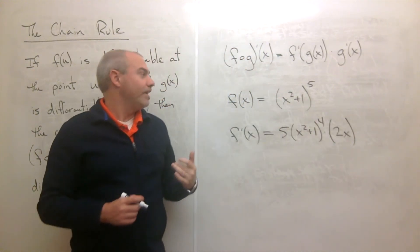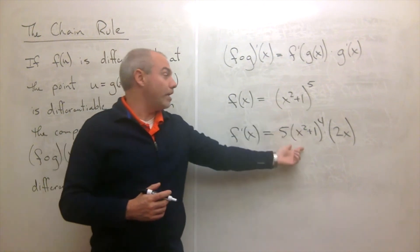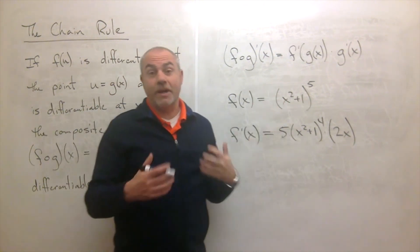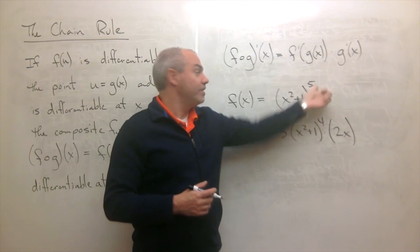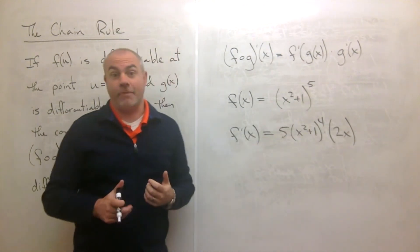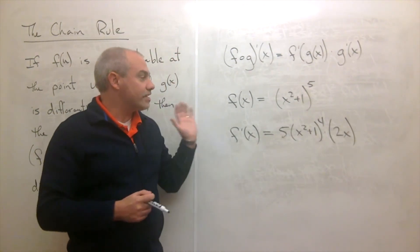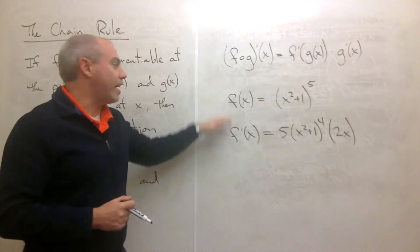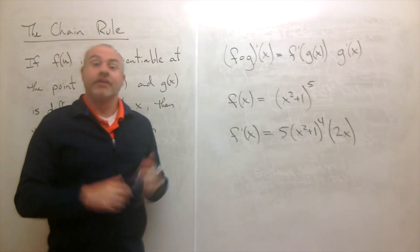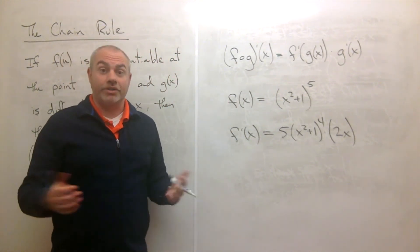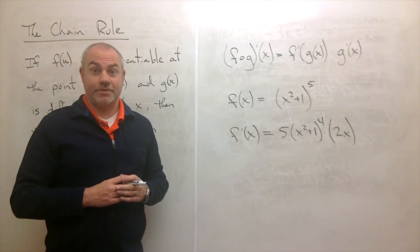Now imagine having to take that derivative by expanding it out five times, multiplying everything together, and then differentiating — that's not very fun. And imagine if it were (x² + 1) to the 50th power. The chain rule is so clean for calculating derivatives quickly. This is what we call the chain rule. Now let's look at some more examples.